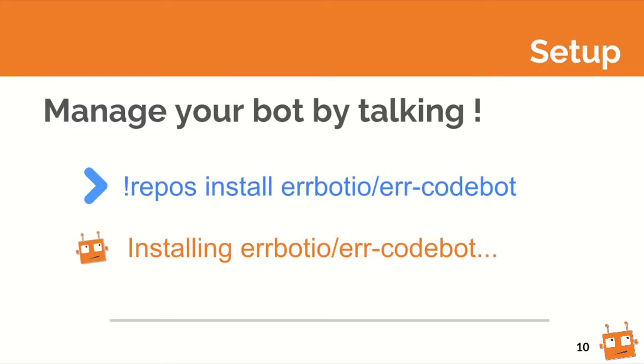Once you are set up, you'll see the bot connecting to your chat room. You can also talk directly to the bot, which is recommended for setting it up. You can ask it to install a plugin — rbotio is a repo on GitHub — and instantly the new commands from that plugin are going to be available in your chat room.